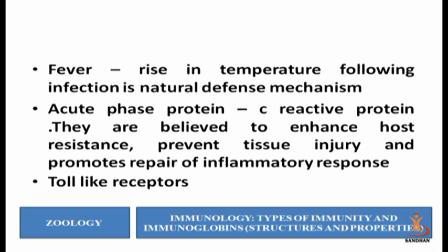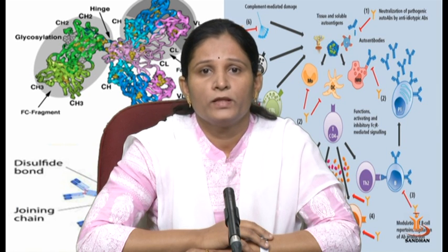For protection of the body, there are certain proteins called acute phase proteins, for example C-reactive protein. They are believed to enhance the host resistance. The C-reactive protein also prevents tissue injury and promotes the repair of inflammatory responses. There are certain toll-like receptors which are also preventing different types of microorganisms.